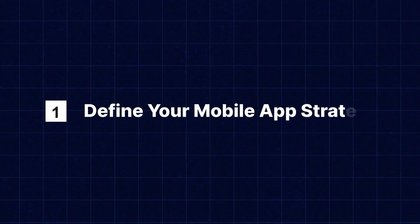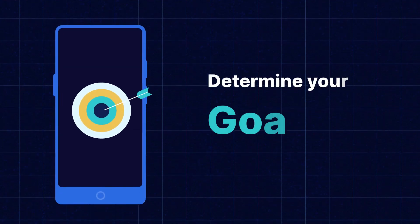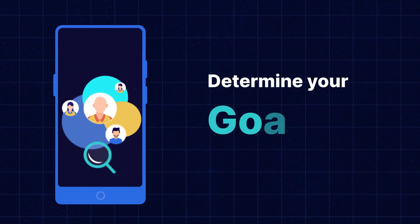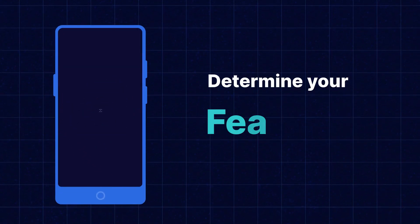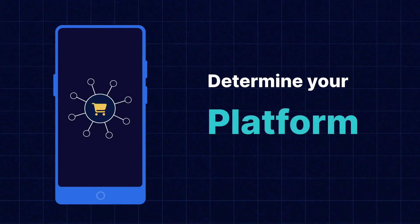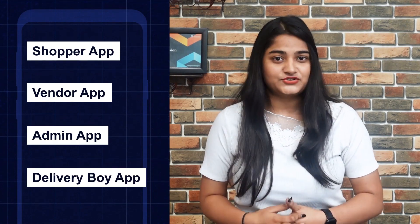Now let's discuss the points. Step one: Define your mobile app strategy. Before diving into the development process, it's essential to define your mobile app strategy. Determine your goals, target audience, desired features, and the platform you want to build for — such as shopper app, vendor app, admin app, delivery boy app, etc.